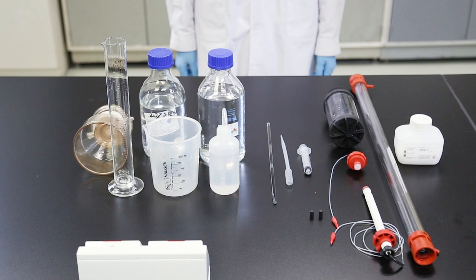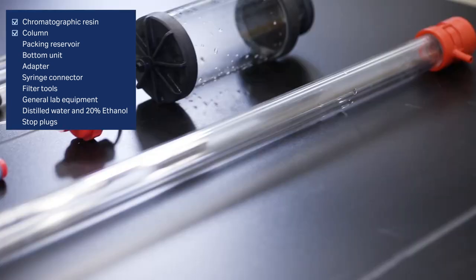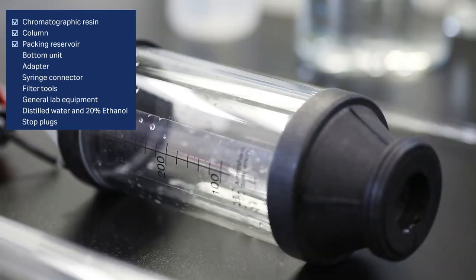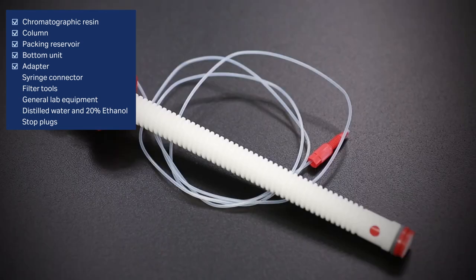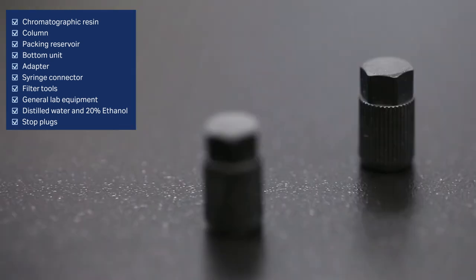Before initiating the packing of any chromatography column, make sure you have all the proper components in order. To pack the column, you will need the resin, a column, a packing reservoir, the bottom unit, the top adapter, a syringe connector, and general lab equipment. You should also have distilled water and 20% ethanol and column stop plugs.